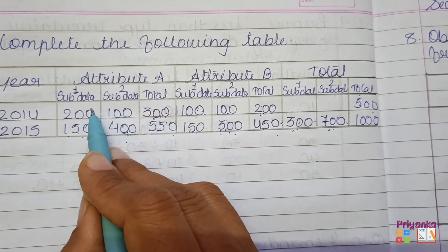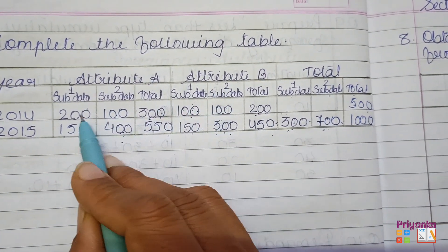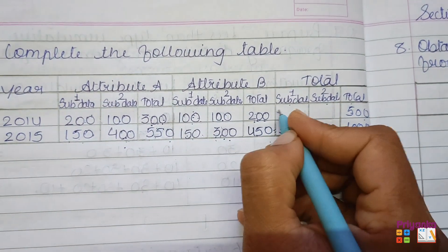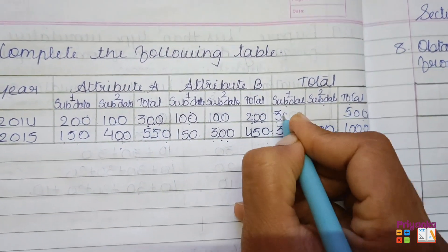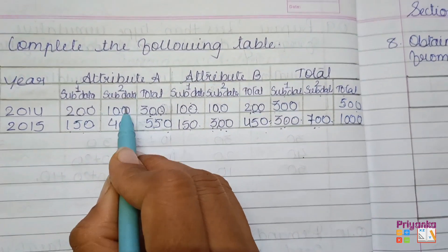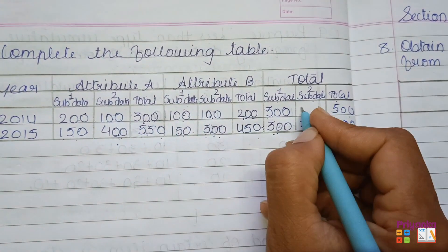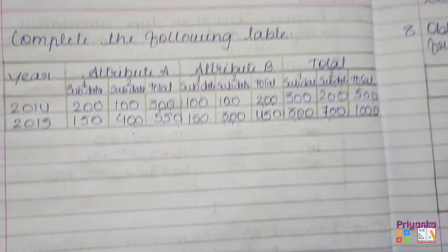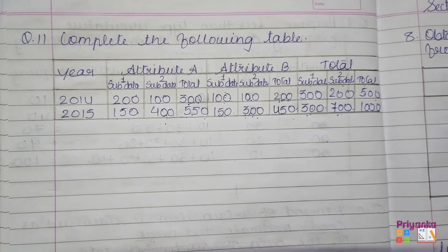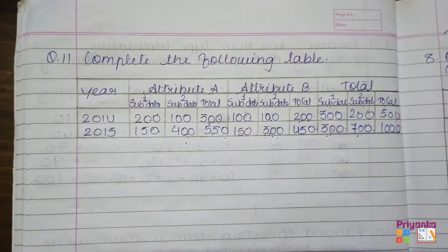The totals for sub-data 1 and sub-data 2 are still incomplete. So add attribute A data and attribute B data: 200 plus 100 will be the total 300. In the same way, sub-data 2: 100 plus 100 is 200. This is how you complete the information given for the table.